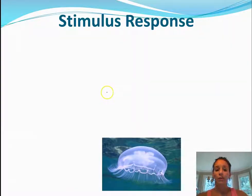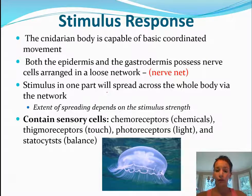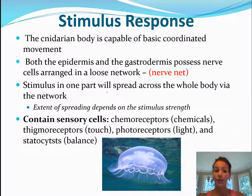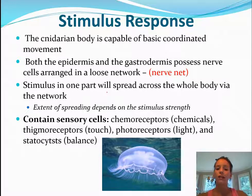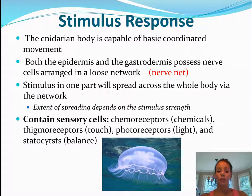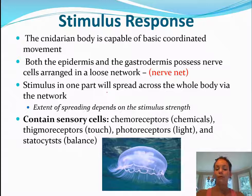As for stimulus response: they don't have a nervous system but they do have a nerve net, which allows basic coordinated movement — like moving vertically. Both the epidermis and gastrodermis have nerve cells in a loose network, which is where the term nerve net comes from. A stimulus in one part spreads through the whole body, similar to how we feel pain throughout our body. The extent of spreading depends on the stimulus strength — a weak stimulus won't spread as widely as a major one. They also have sensory cells throughout their body.